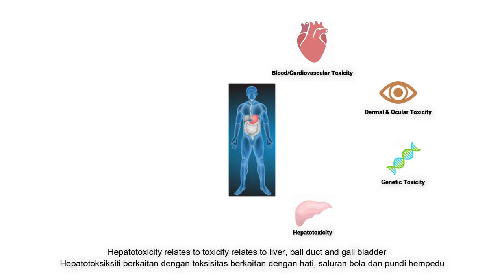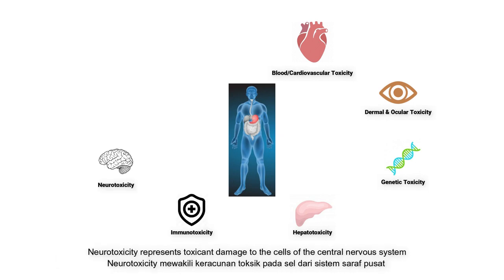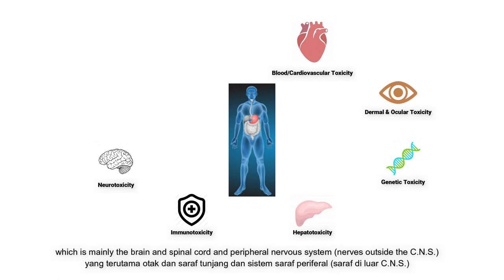Hepatotoxicity relates to toxicity to the liver, bile duct, and gallbladder. Immunotoxicity relates to the immune system. Neurotoxicity represents toxicant damage to cells of the central nervous system, which is mainly the brain and spinal cord, and the peripheral nervous system, which is the nerves outside the central nervous system.